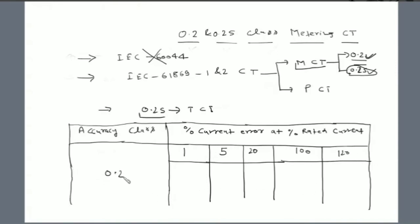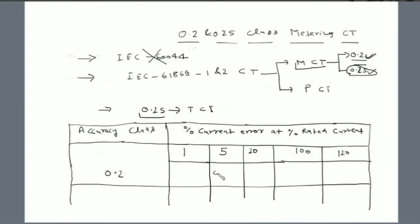For a 0.2 class CT: at 1% of rated current, the CT will not be able to sense it, so there is no measurable error. At 5% of rated current, the 0.2 class CT will produce an error of 0.75%. At 20% of rated current, the error is 0.35%. At 100% the error is 0.2%, and at 120% the error is also 0.2%.